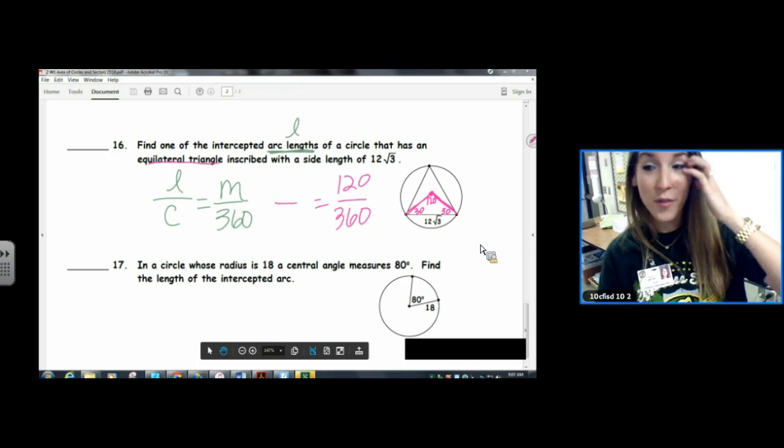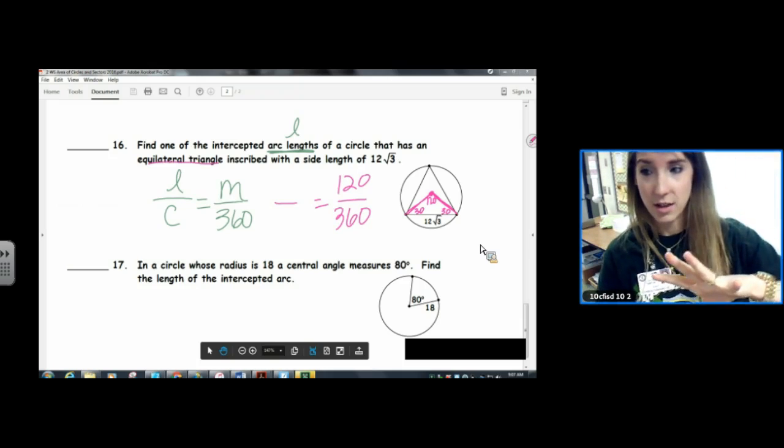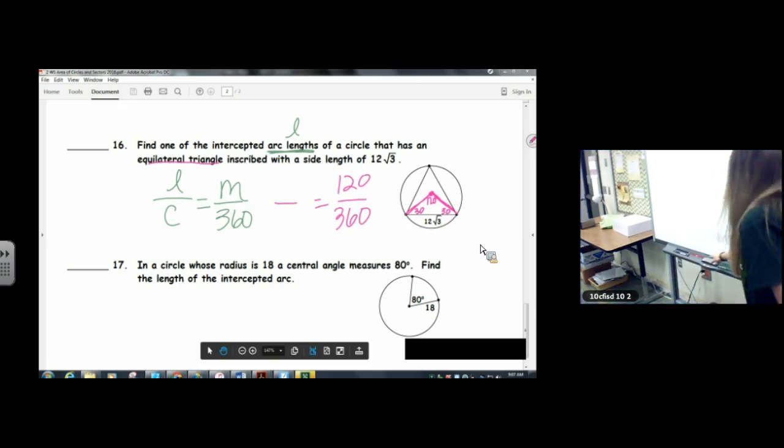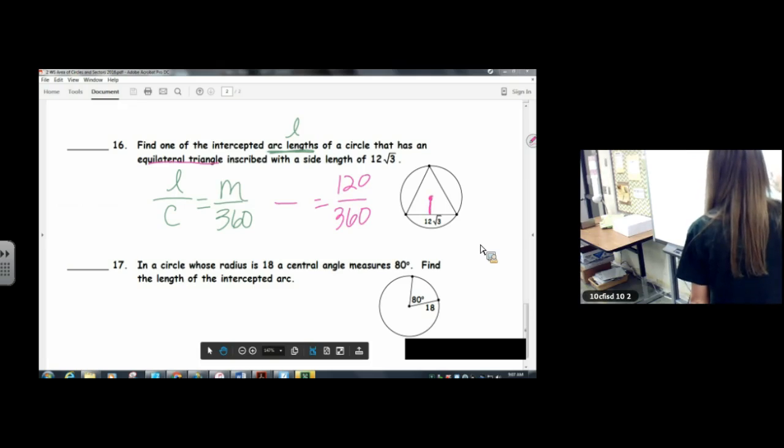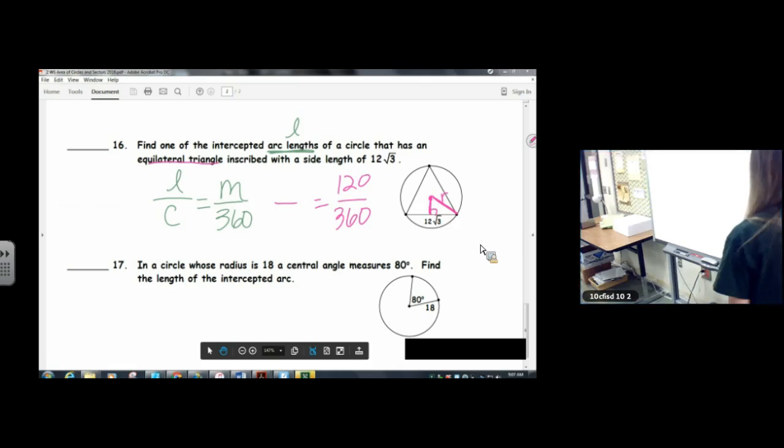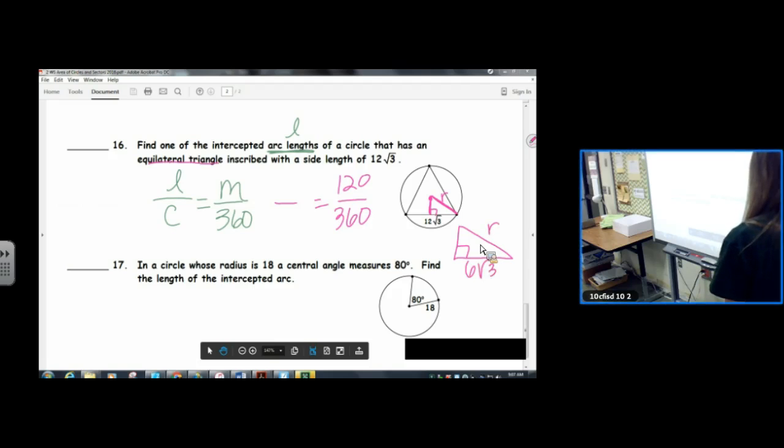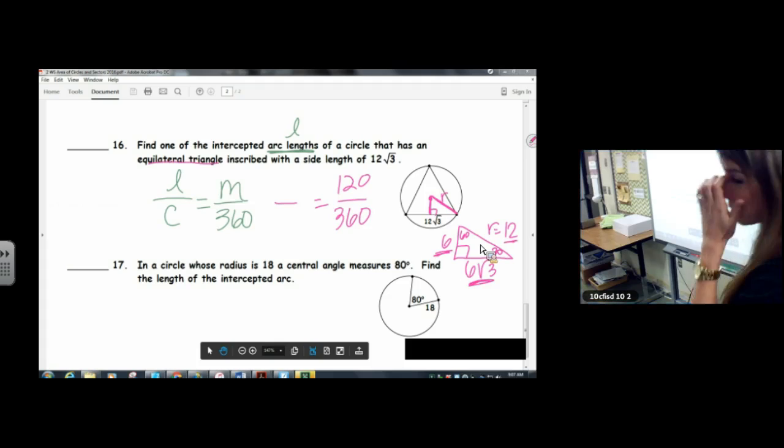We're kind of in luck because when I—let me redraw this larger for you—this is 6 root 3, this is 60 and 30. X, x root 3, 2x. X, x root 3, 2x. Do you know where I got all those parts from? 12 root 3, I cut it in half, and then I did my 30-60-90 trick.